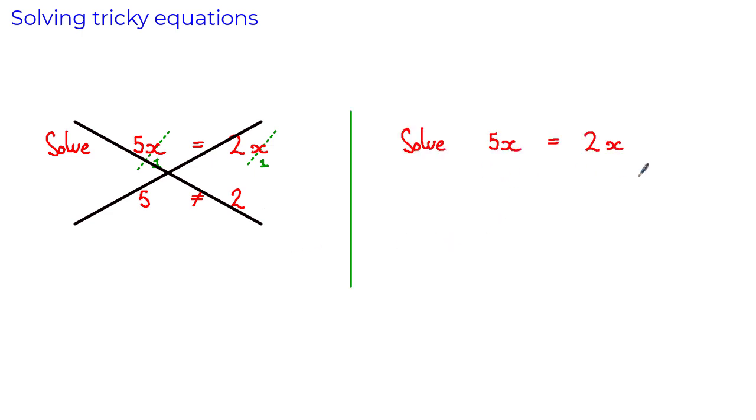Another way we could try to solve this equation is by subtracting 2x from both sides of the equation, which gives us that 3x is equal to 0. And the only value of x that satisfies this equation is when x is equal to 0.